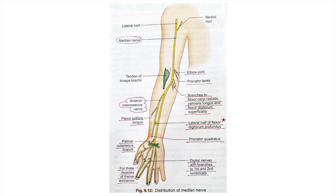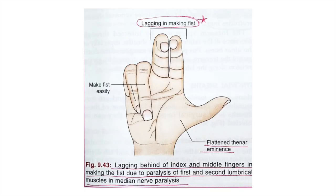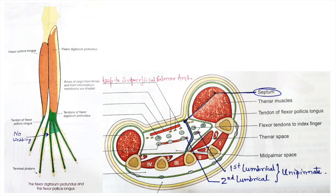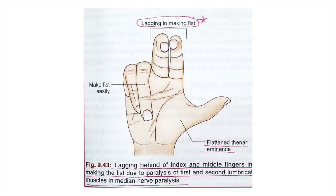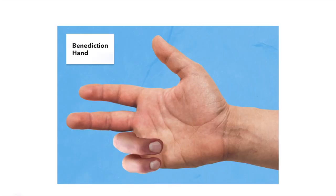If the median nerve is injured and all those muscles are paralyzed, when you ask the patient to close a fist, think about flexor digitorum profundus: the lateral two tendons for index and middle finger are paralyzed. At the IP joints, extensor digitorum will dominate due to unopposed action. Flexor digitorum superficialis, which chiefly flexes the proximal IP joint, is also paralyzed. However, in the ring and little finger, the IP joints are still flexed because their FDP tendons are innervated by the ulnar nerve.